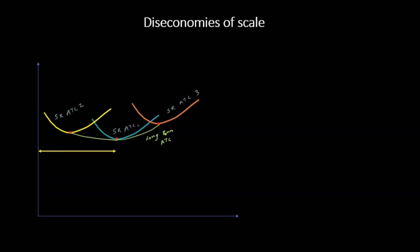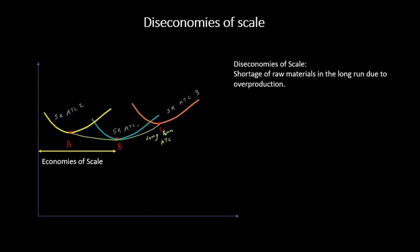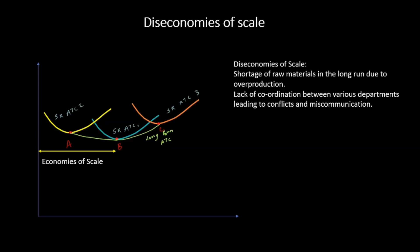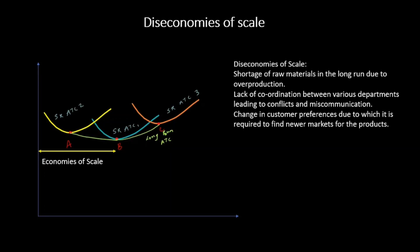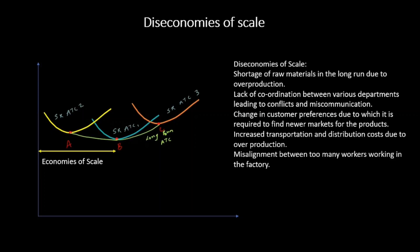Coming back to the graph, from point A to B the firm operates under economies of scale, and from B to C the firm operates under diseconomies of scale. Under diseconomies of scale we see shortage of raw materials, lack of coordination between departments, changes in customer preferences requiring the firm to find newer markets, increased transportation and distribution costs, and misalignment due to too many workers in the factory.